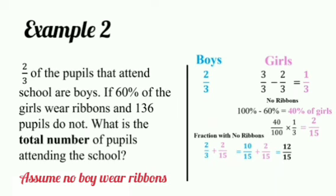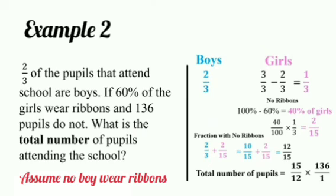Now, twelve-fifteenths represents the fraction of the school population that does not wear ribbon. Given that the whole number representing this is 136, we can now find the whole by inverting the fraction — so we will have fifteen over twelve — and multiplying this by the whole number. When we do the cancellation, this would give me 170, so the total number of pupils in the school is 170.